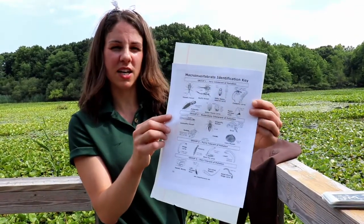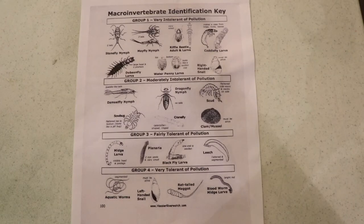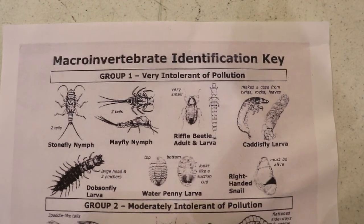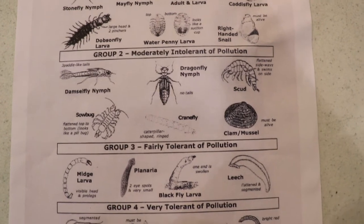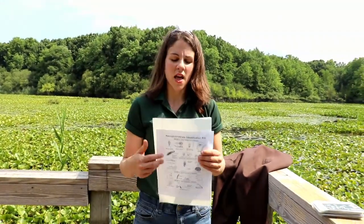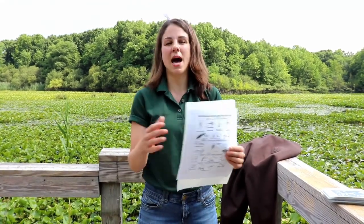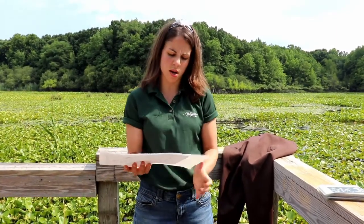Another macroinvertebrate identification key is good because it breaks macroinvertebrates into groups indicating whether they're tolerant or intolerant of pollution: group one is very intolerant, group two moderately intolerant, group three fairly tolerant, and group four very tolerant. This field guide helps when filling out the Earth Echo Water Challenge sheet, which groups macroinvertebrates by pollution sensitivity. So even if you don't find the exact species listed, you can still mark that you found a group-three pollution-tolerant macroinvertebrate.